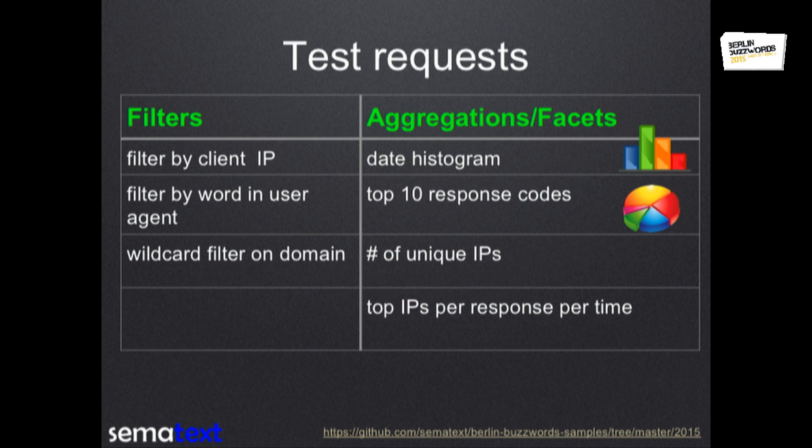We had doc values in both use cases for not-analyzed fields. We did soft commits every five seconds while indexing and hard commits every 200 megabytes. Because Elasticsearch has the underscore-all field to index everything by default, we did the same for Solr — we had a catch-all field where we copied everything. The queries: we had seven queries, starting from a simple filter by client IP to a more expensive filter like wildcard filtering. Then we had a bunch of analytics queries, from a date histogram to the most expensive one: a nested aggregation.